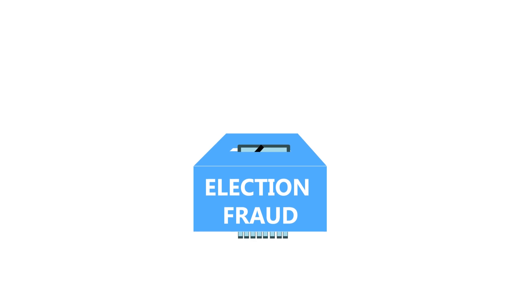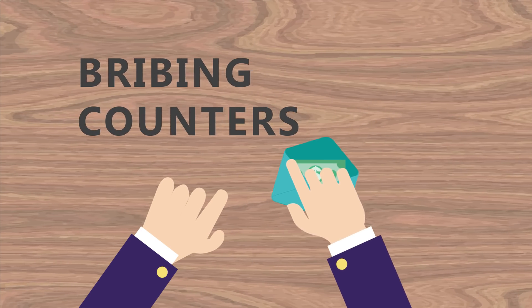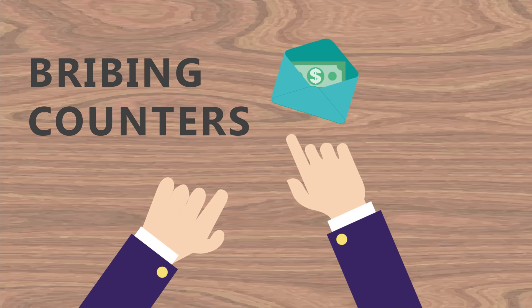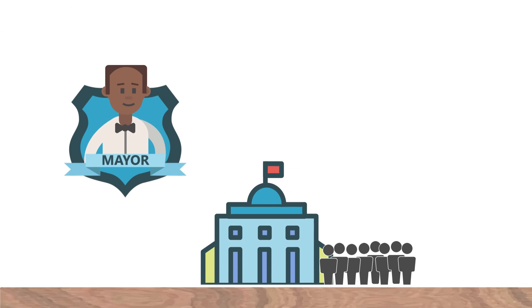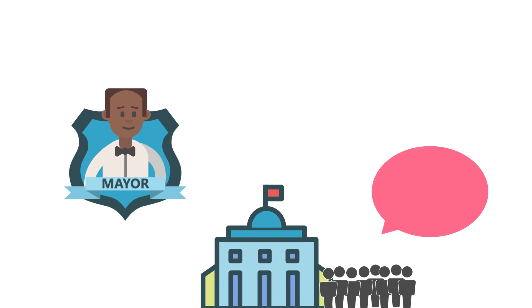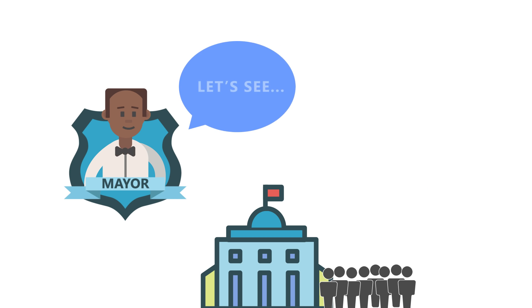In the last election, it was found that Saffron, Nathan's opponent, attempted to cheat by modifying the votes after they were cast by bribing those who were counting the votes. The citizens of Serenity have demanded that the upcoming election use a more secure system to make attempts at fraud much more difficult.